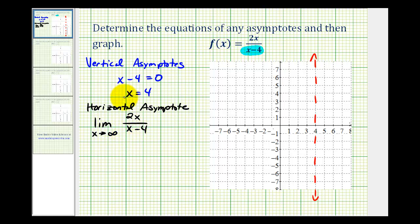If the degree of the numerator and denominator are the same, then the limit is going to be equal to the ratio of the leading coefficients, which in this case would be two over one, which is equal to two.